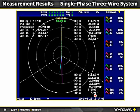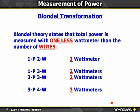The measurement of power comes back to theory by Blondell's transformation, which states we measure total power with one fewer wattmeter than the number of wires in the circuit. Single-phase two-wire: one wattmeter. Single-phase three-wire (split-phase): two wattmeters. Three-phase three-wire: two wattmeters. Three-phase four-wire: three wattmeters. Blondell proved this through vector analysis and it is the standard by which everyone operates.